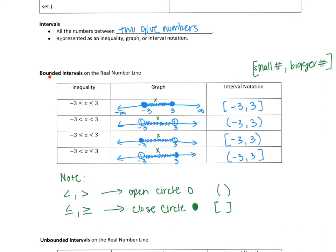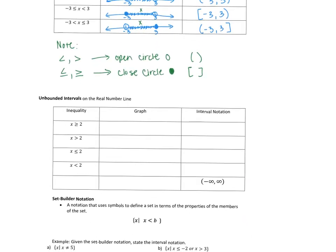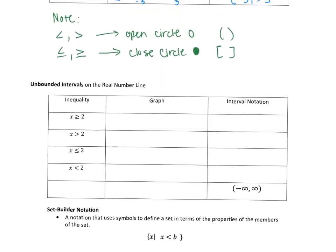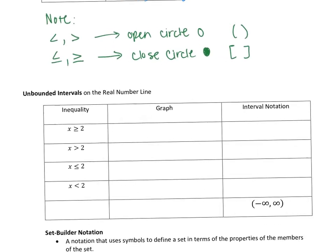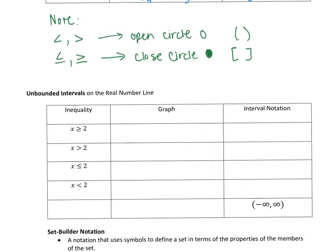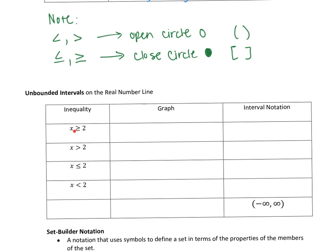Bounded intervals refers to x being between two numbers. It's nice because there are two finite numbers it's between. But this is not always the case — I'm going to show you some cases where it's not so finite. Let's take a look at unbounded intervals. In these examples, notice how the inequality only gives you one number being compared to x, rather than two.